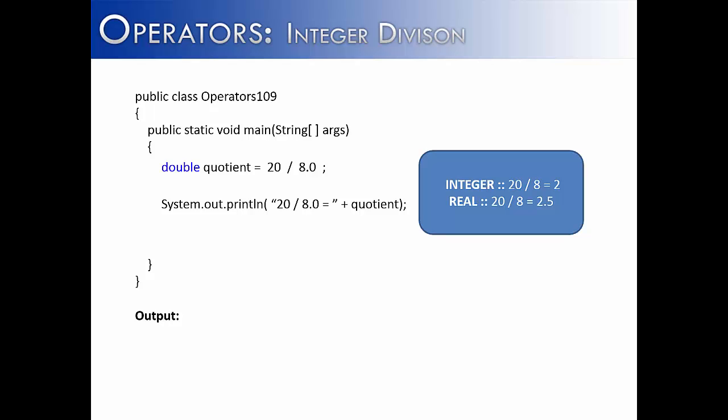So in this example, I've shown you another scenario. What if I have the integer literal 20 and the double literal 8.0? What would happen if I divide 20 into 8 parts? I would get the real result being 2.5, because a real number is involved.